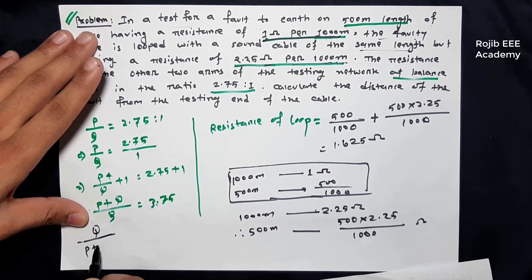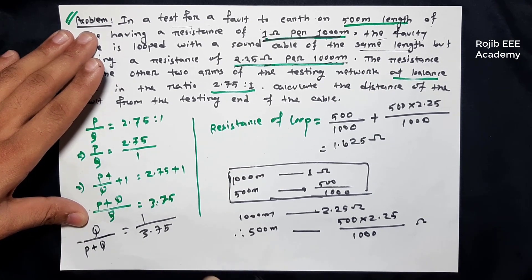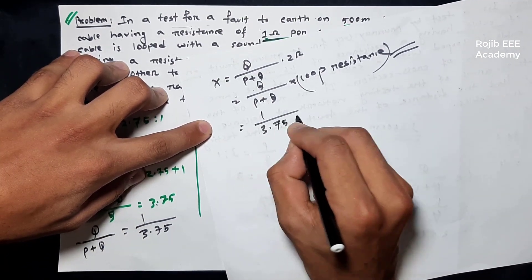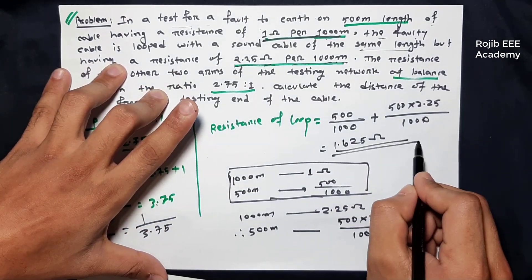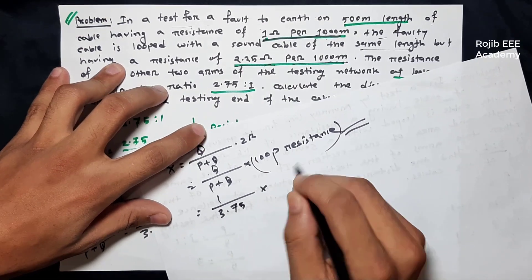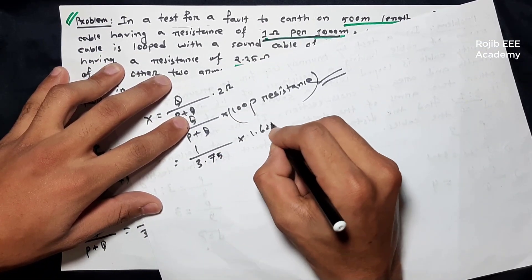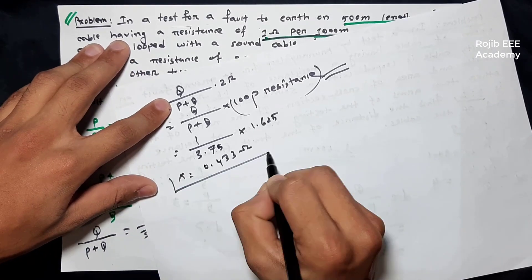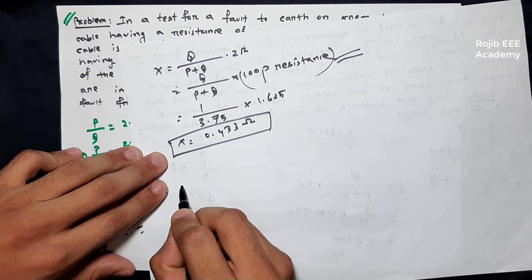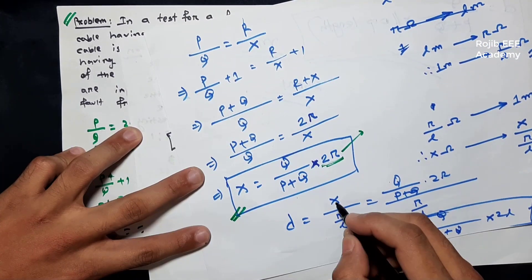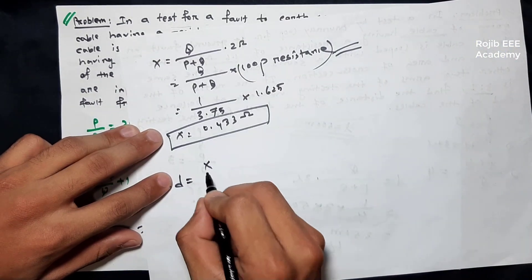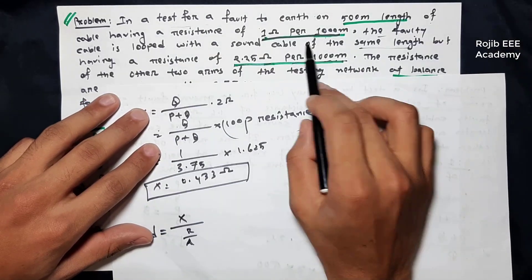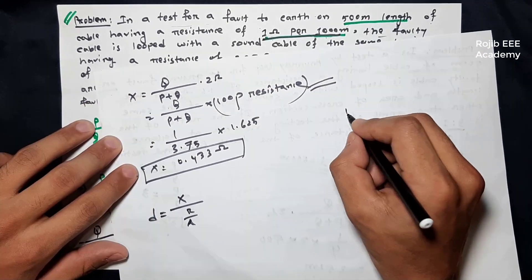Q divided by P plus Q: the Q is equal to 1 divided by 3.75. So 1 divided by 3.75 into loop resistance. The loop resistance distance is 1.625, and the calculation gives 0.433. The distance x is calculated as x divided by R by L.